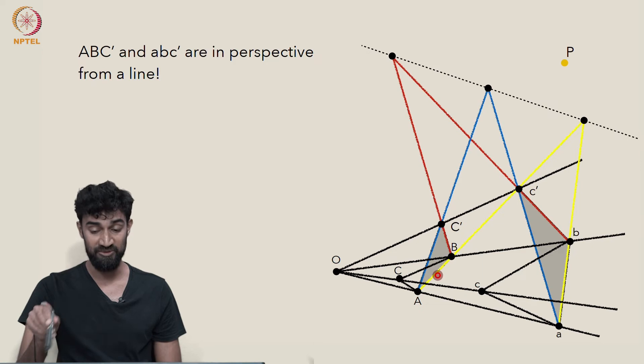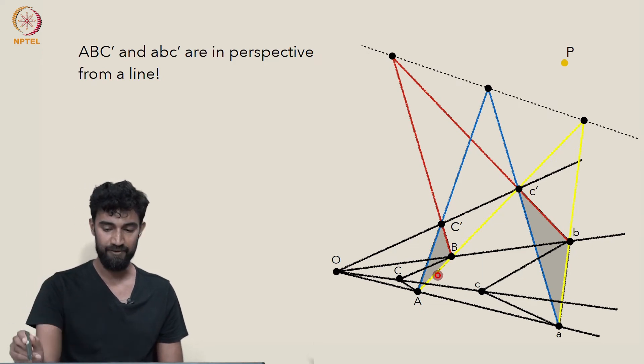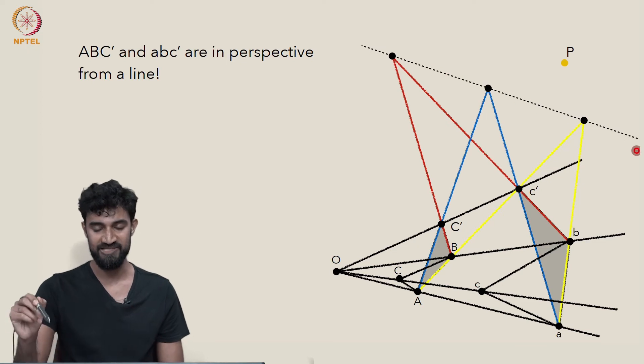So from our Desargues' theorem that we just proved, we have this. These two triangles are in perspective from this line.